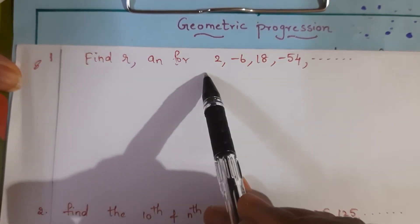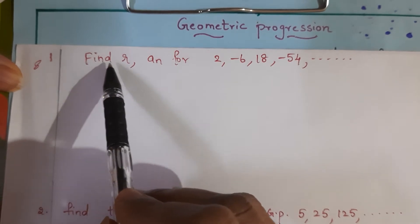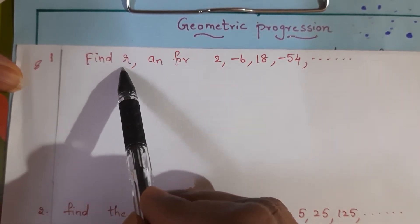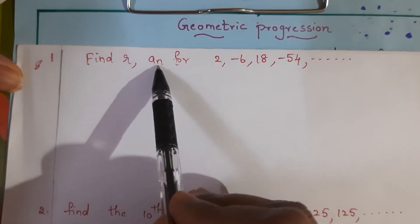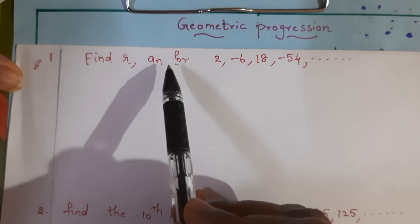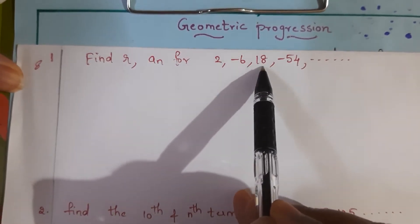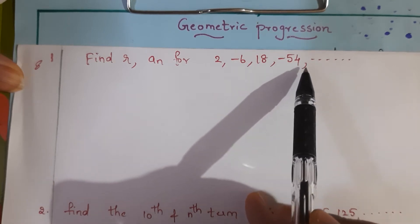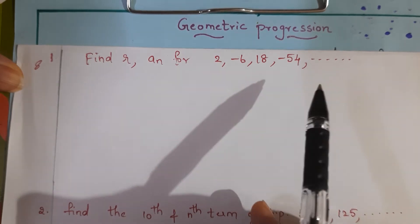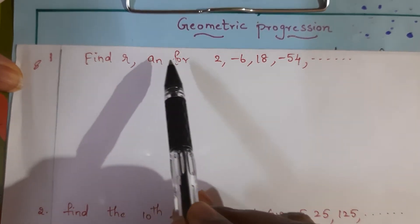Let us do some problems in geometric progression. The first problem: find R, that is the common ratio, and the nth term of the geometric progression, that is An, for the list of numbers 2, minus 6, 18, minus 54. This is in a geometric progression, so we have to find out the common ratio and the nth term.